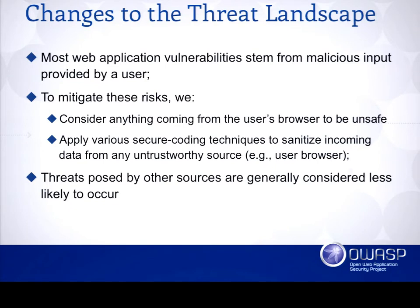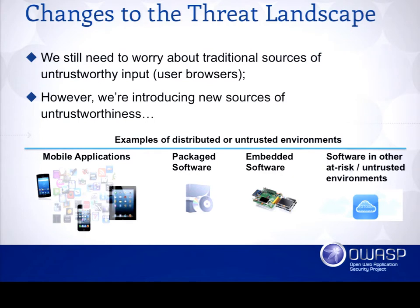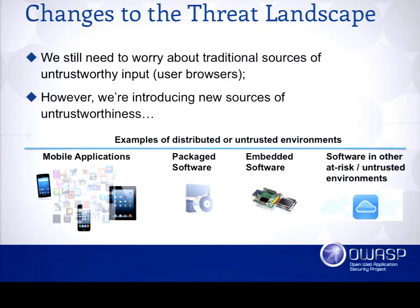With the introduction of mobile computing, we still need to worry about traditional untrustworthy input from web browsers, particularly in hybrid apps on mobile. We still have to worry about secure coding techniques. However, we're introducing new sources of untrustworthiness. Mobile applications, packaged software, embedded software — these are all places where you're hosting code in an environment where you, the organization, have no control over who's going to see that code or what they may physically do with it. This introduces a new source of uncertainty.